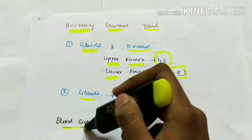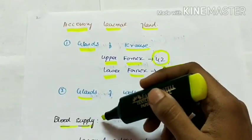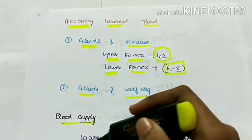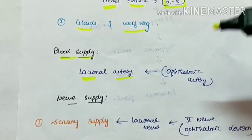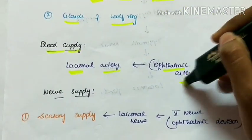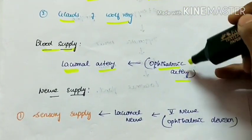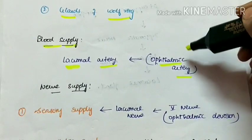Blood supply to the lacrimal gland is by the lacrimal artery, which is a branch of the ophthalmic artery, which is in turn a branch of the internal carotid artery.